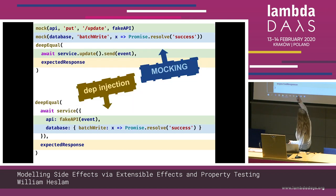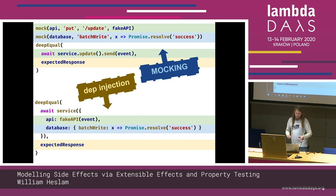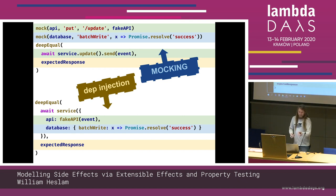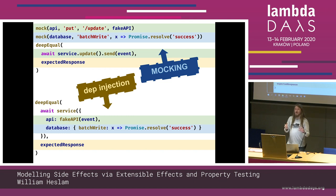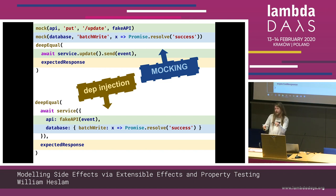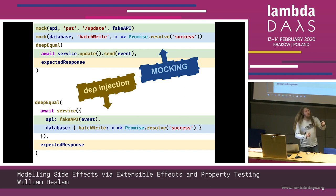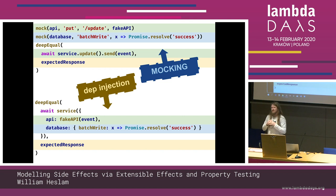So to summarize: mocking preserves your program structure but makes tests more fundamentally complex. Dependency injection changes your code under test but makes the tests themselves conceptually simpler. If mocking can be brittle, slow, and a liability, and dependency injection can melt into a murky higher-order function soup especially in an untyped language — is there a way to combine the strengths of both approaches and get the best of both worlds?